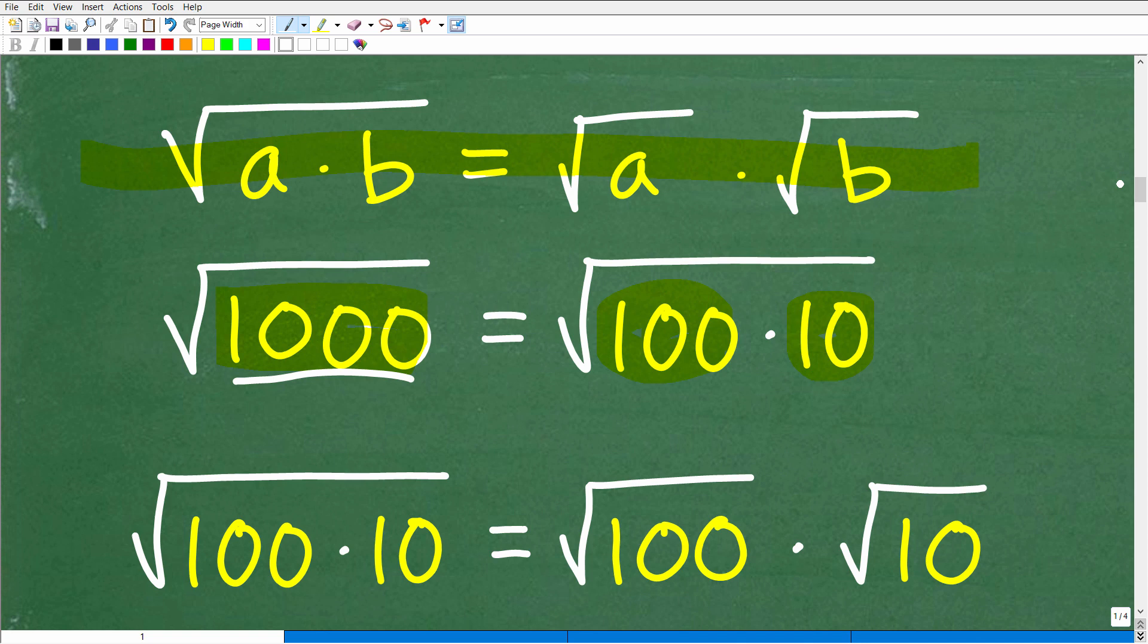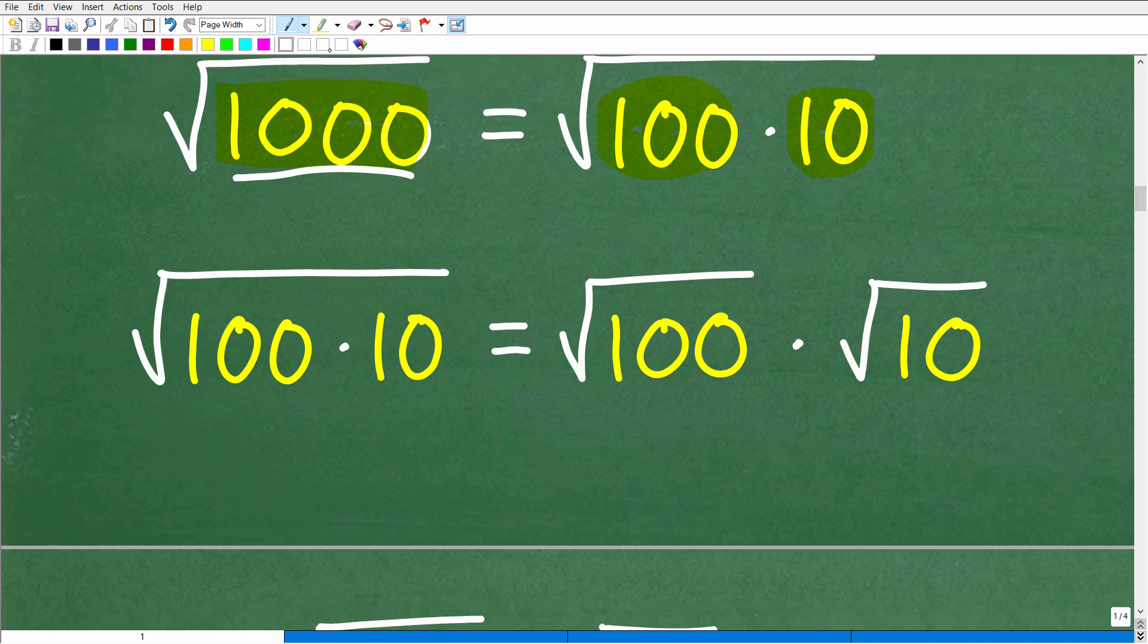So don't get too stuck on trying to find the largest perfect square factor. It's convenient to do so, but if you just have a couple perfect square factors, just go with it. And as you work the problem down, you'll still get to the same correct final answer.